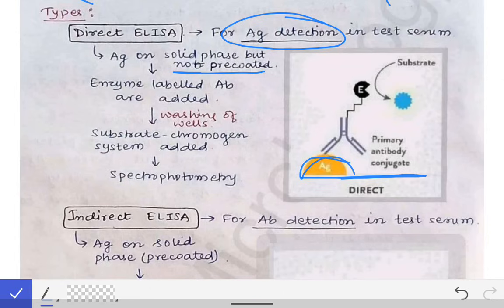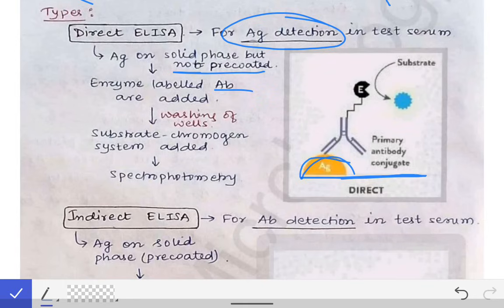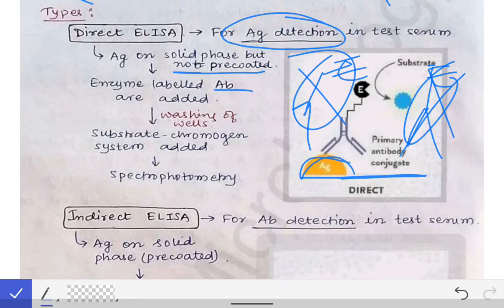We then add the enzyme-labeled antibody into the well. After that, we wash off the well so that extra antibodies not bound to antigen are removed. Only those antibodies linked to the antigen in the solid phase will remain inside the well.